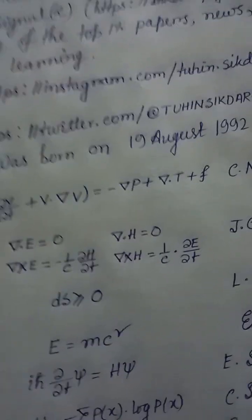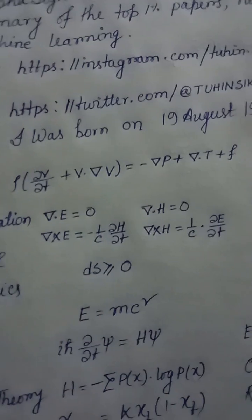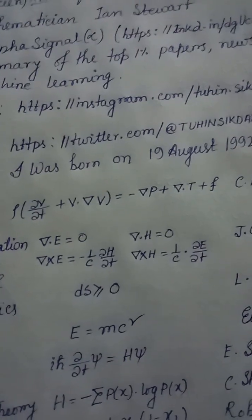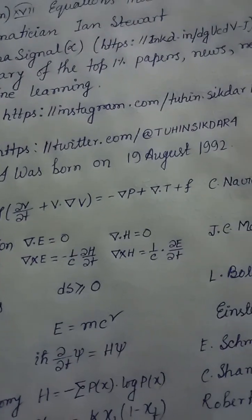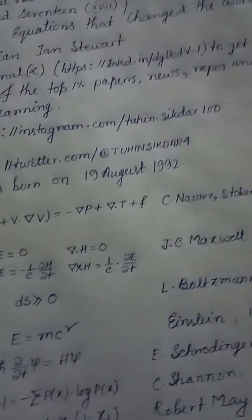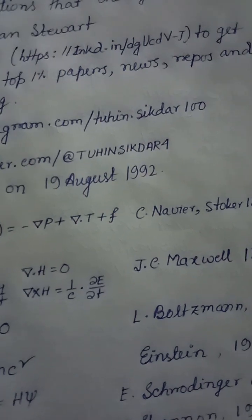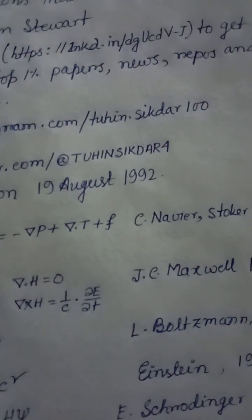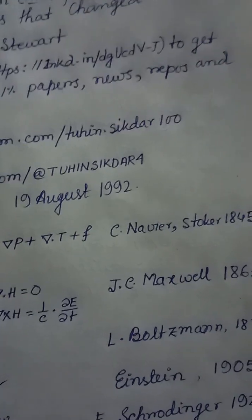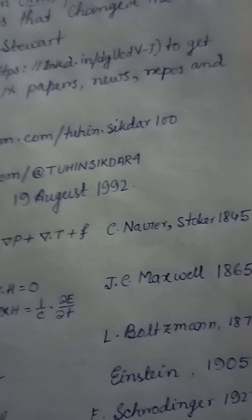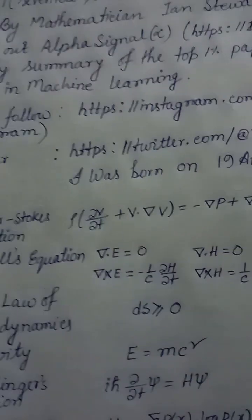Equation 10: Navier-Stokes equation — ρ(∂V/∂t + V·∇V) = −∇P + μ∇²V + F, Navier-Stokes, 1845.